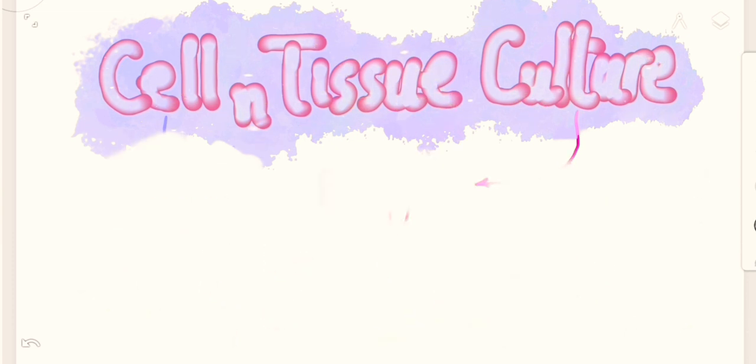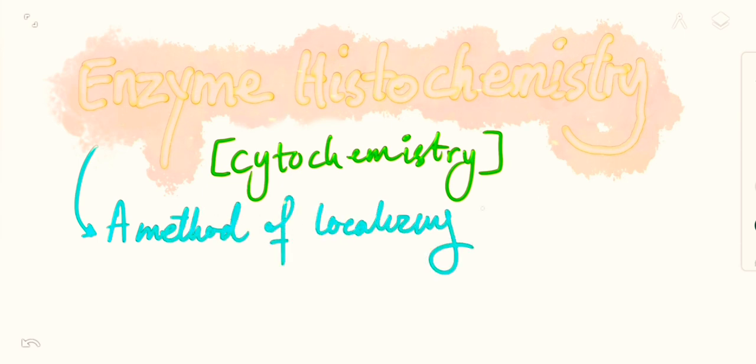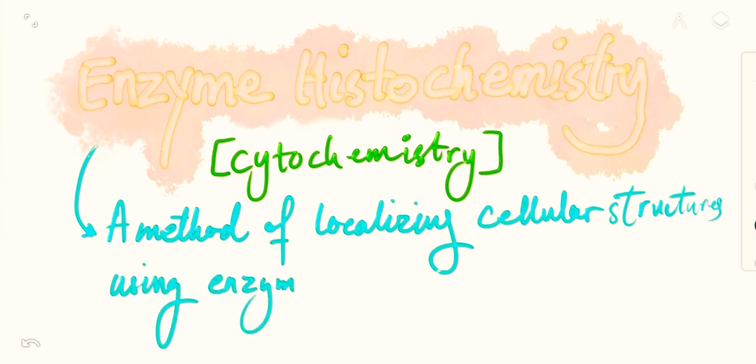Going forth we next have enzyme histochemistry. Enzyme histochemistry is also called cytochemistry. Enzyme histochemistry is a method of localizing cellular structures using enzymatic activity that are present in those structures.